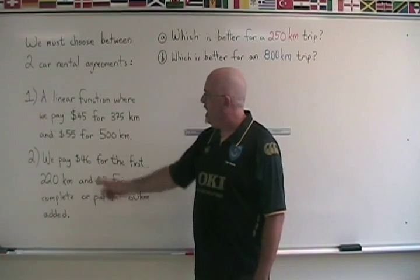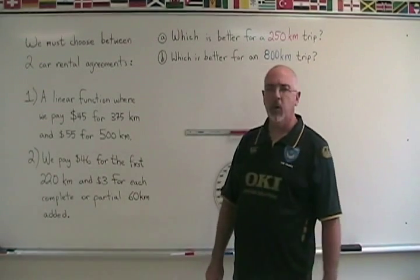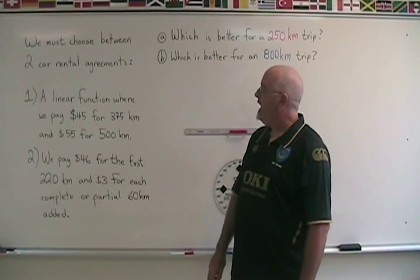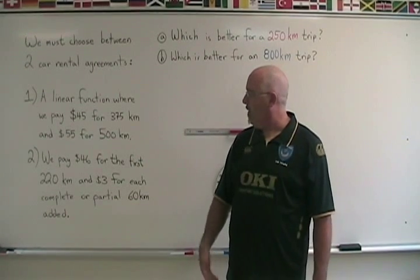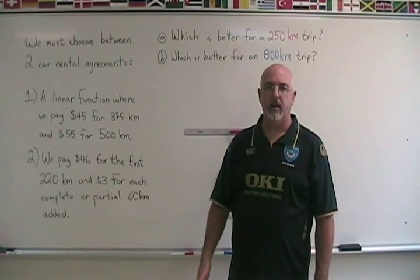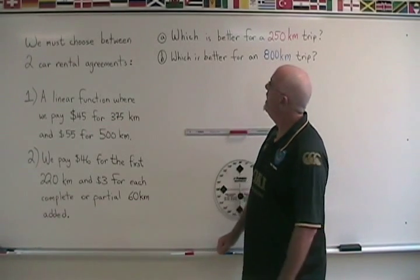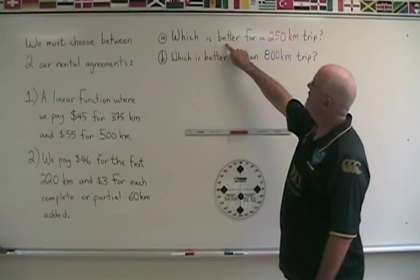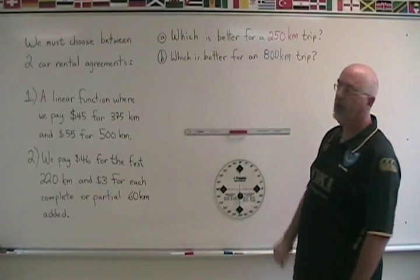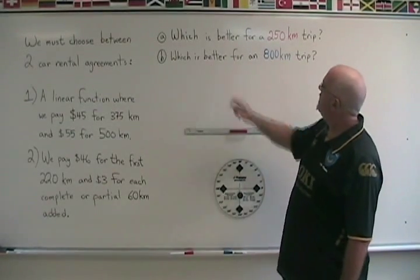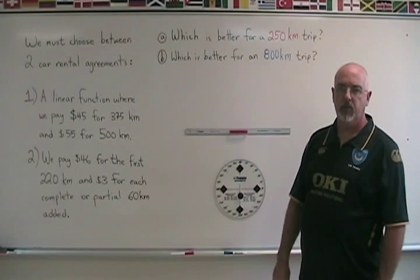In agreement 2, we pay $46 for the first 220 kilometers, and then we pay $3 for each complete or partial 60 kilometers added after that. We are asked which is the better agreement for a 250-kilometer trip, and which is the better agreement for an 800-kilometer trip.